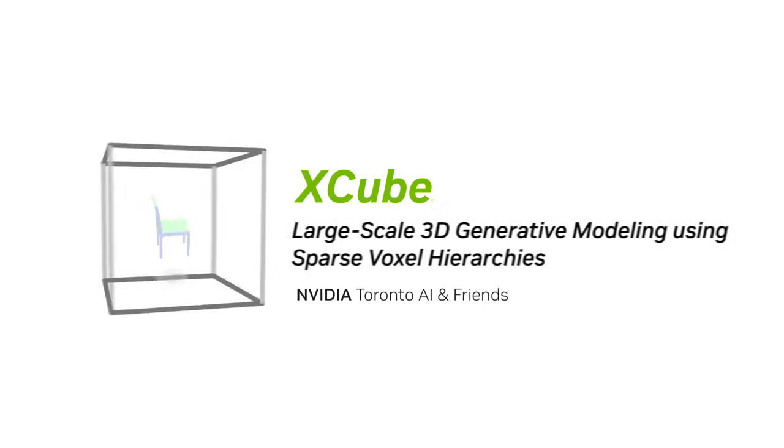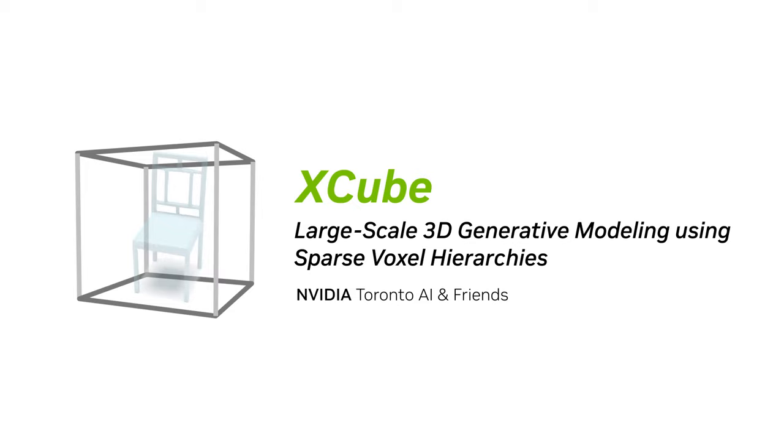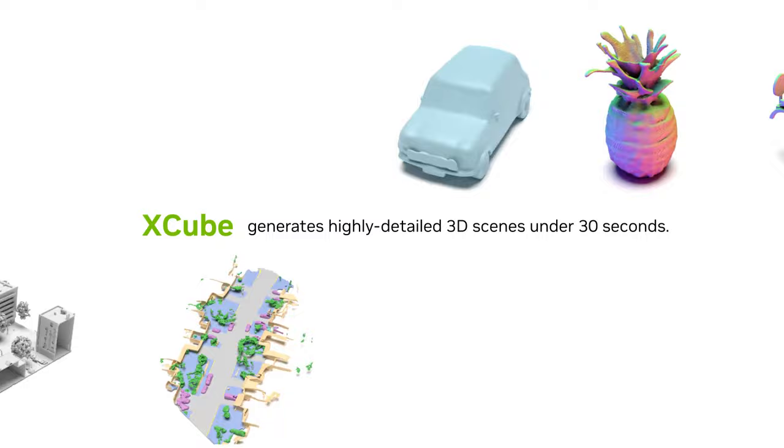We present XCube, a large-scale 3D generative model using sparse voxel hierarchies. XCube is a novel method for generating highly detailed 3D objects and scenes encoded as sparse voxel grids with arbitrary attributes.